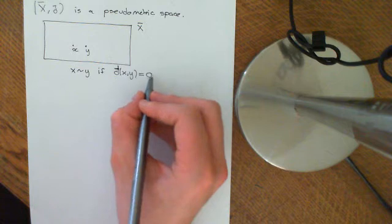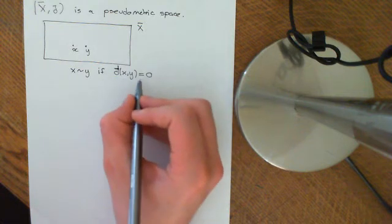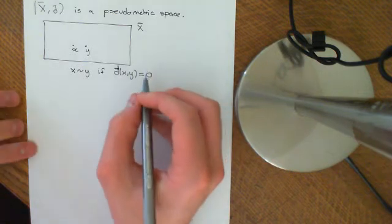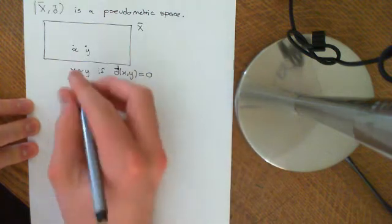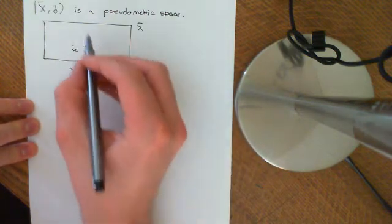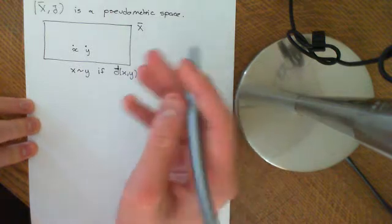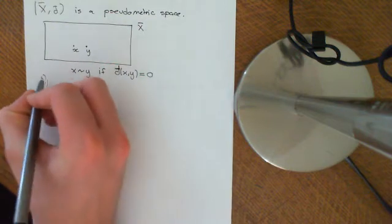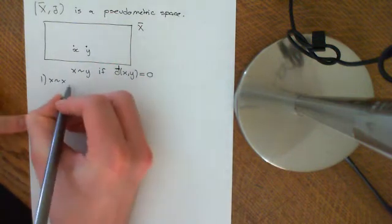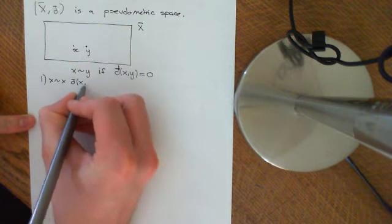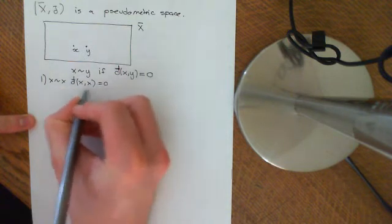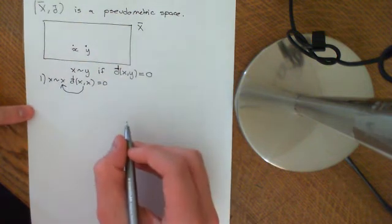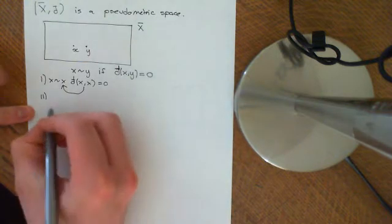So I'm going to put all elements which are distance zero apart from each other into the same equivalence class. I firstly need to prove that this defines a valid equivalence relation, so that these equivalence classes are disjoint and form a nice partition of the set. First axiom: x is related to x. Clearly, d̄(x, x) = 0 — that's one of the axioms of a pseudo-metric space — so reflexivity holds.